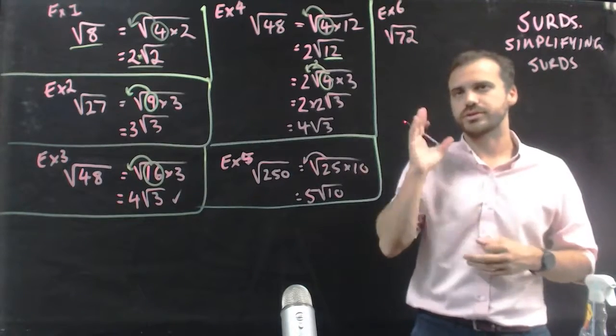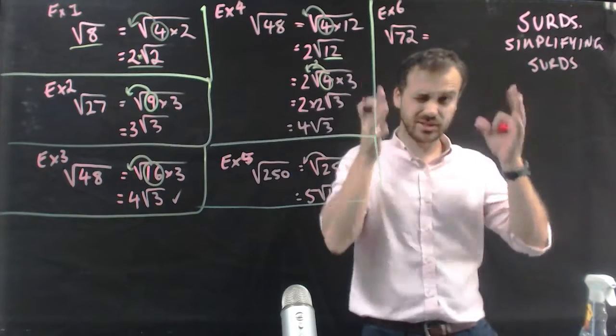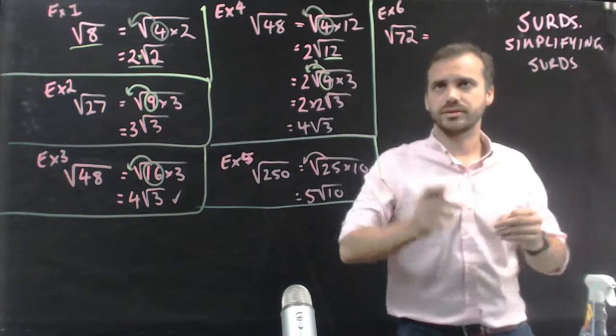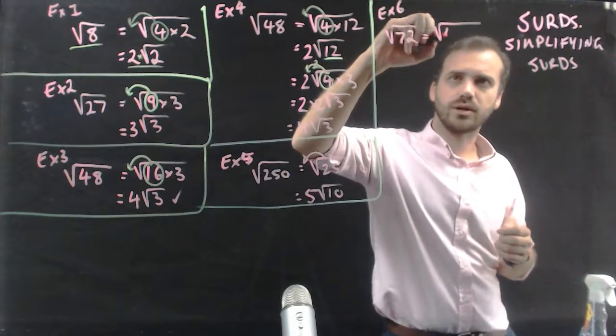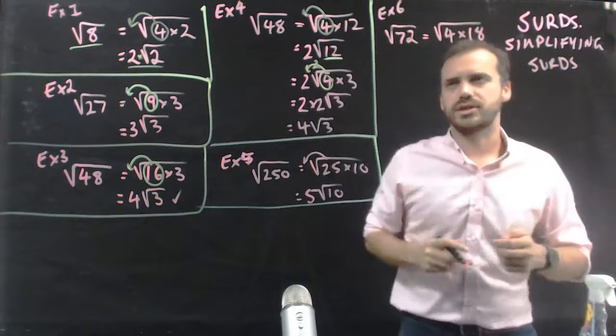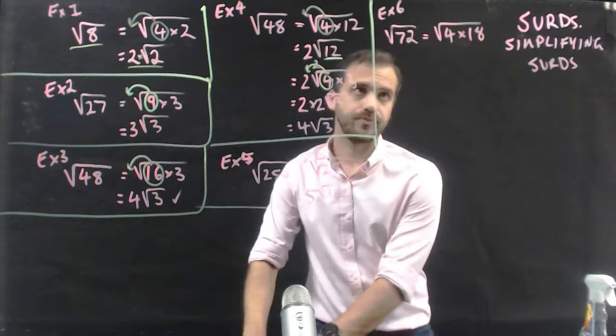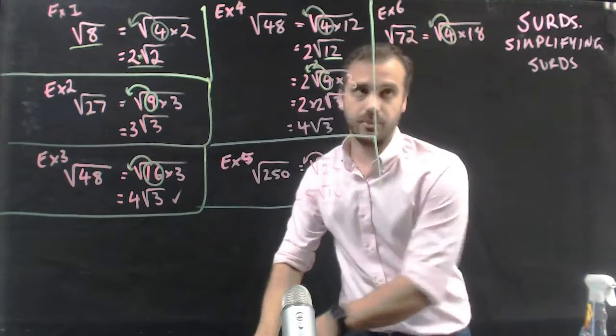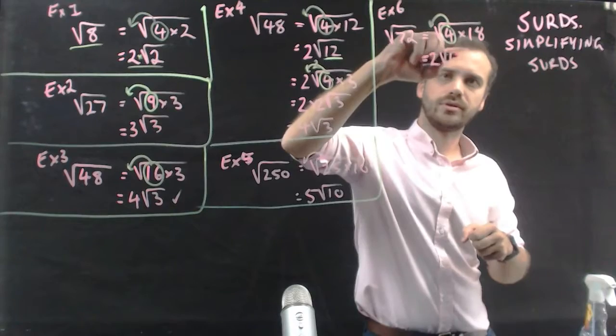Alright, one more. Root 72. Look inside of 72, ask yourself, what can I find there? Think, think, think, alright, I think I've found a 4. 4 times 18 is going to make 72. That's what I've found. You might have found something different. I see the 4, I move the 4 out, and I'll end up with 2 root 18.